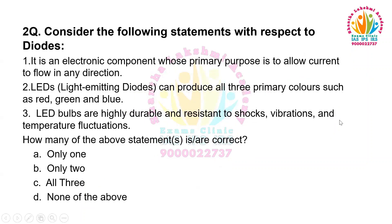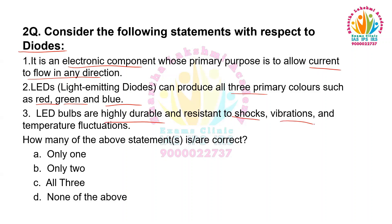Moving to the next question. Consider the following statements with respect to diodes. It is an electronic component whose primary purpose is to allow current to flow in any direction. LEDs — light emitting diodes — can produce all 3 primary colors such as red, green and blue. LED bulbs are highly durable and resistant to shocks, vibrations and temperature fluctuations.